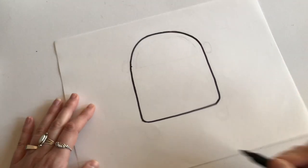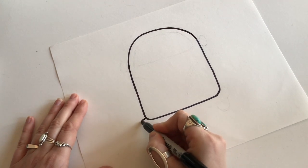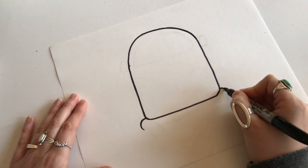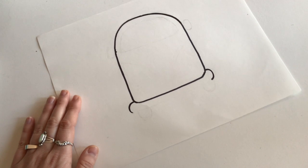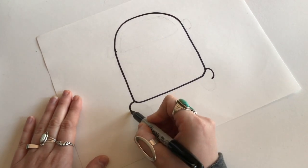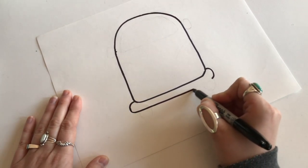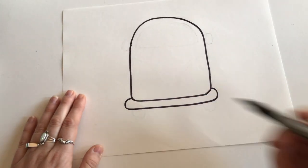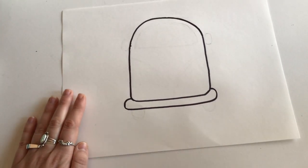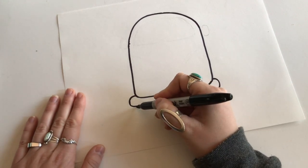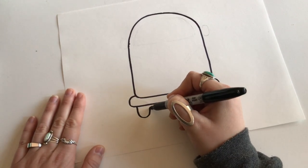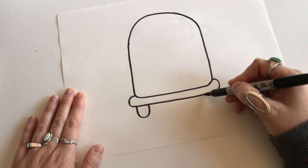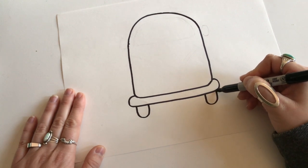Now we're gonna draw this bottom part and it kind of sticks off right down here, and it's a long skinny rectangle with curved edges. Okay, while we're down here we can go ahead and draw our tires. One there and one here.